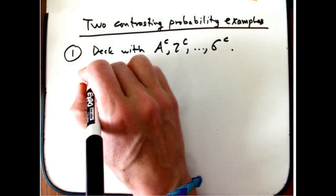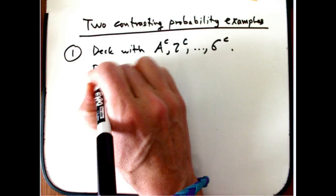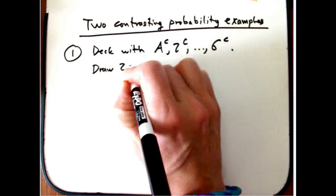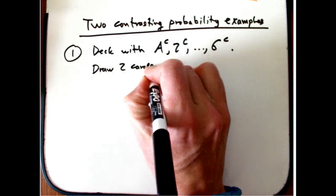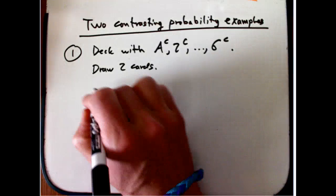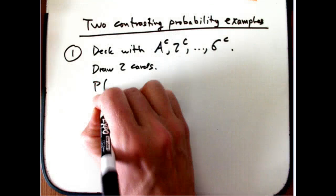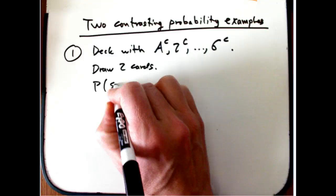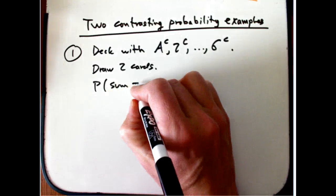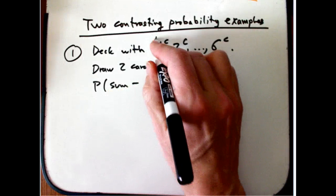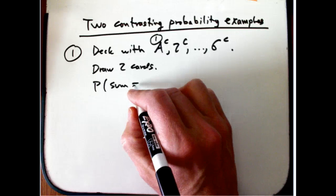And I'm going to draw two cards. And I want the probability that the sum of the values, where this is counting as one, the sum is equal to three.